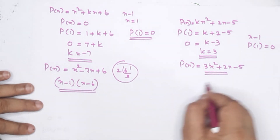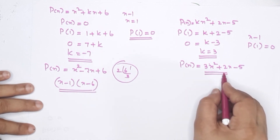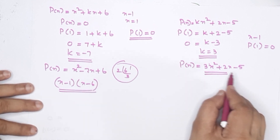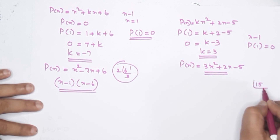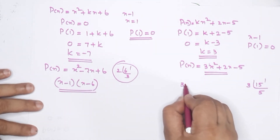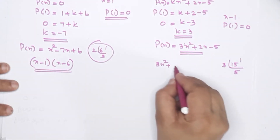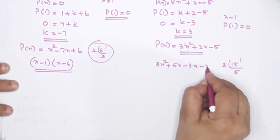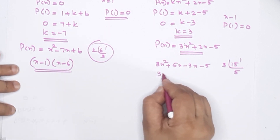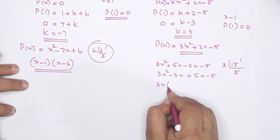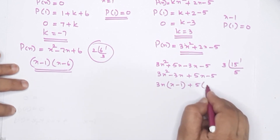To factor 3x squared plus 2x minus 5, we split the middle term. Here 3 times 5 is 15, and we need two numbers that multiply to 15 and add to 2. Those are 5 and 3. Rewriting: 3x squared minus 3x plus 5x minus 5. Taking 3x outside: 3x times x minus 1, and 5 outside: 5 times x minus 1.